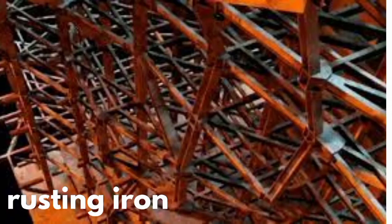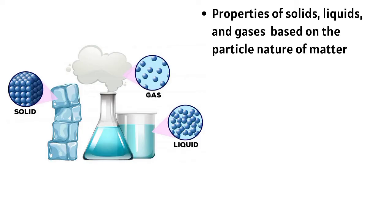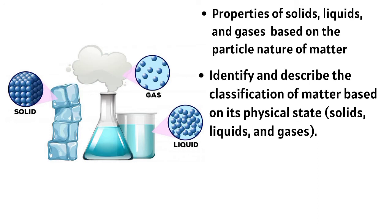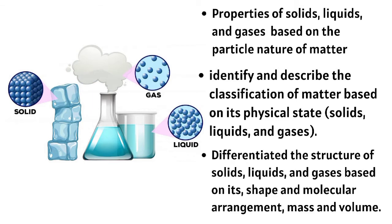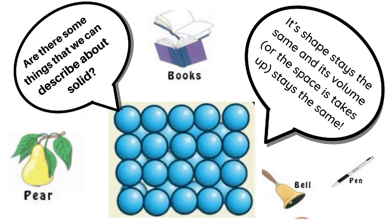In the previous lesson, you were able to explain the properties of solids, liquids, and gases based on the particle nature of matter. You were also able to identify and describe the classification of matter based on its physical state, and differentiate the structure of solids, liquids, and gases based on shape, molecular arrangement, mass, and volume. We find matter in three different phases.